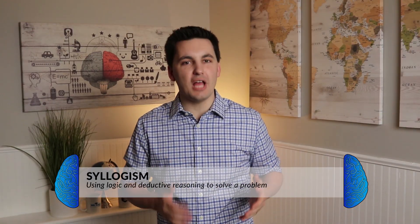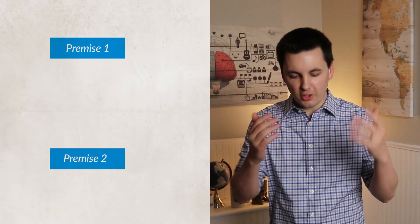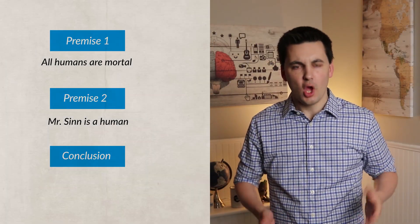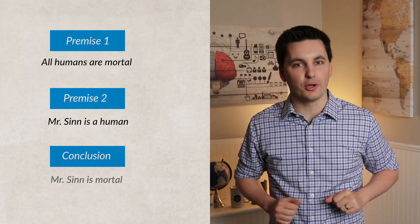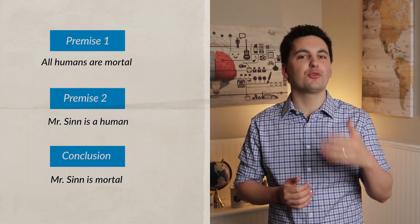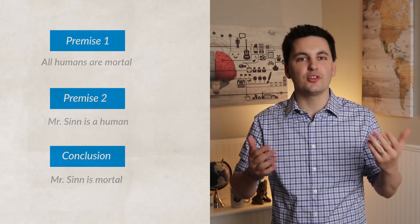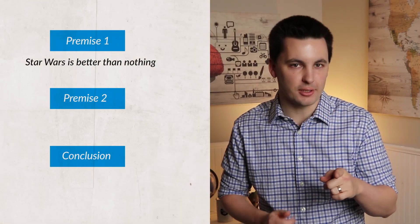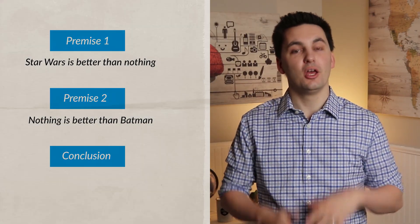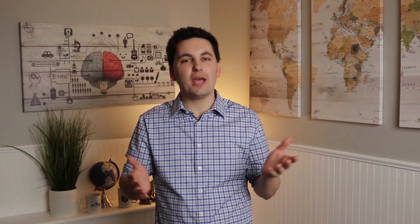We also use syllogism, which is when we use logic to try and solve a problem. For example, if all humans are mortal and Mr. Sinn is a human, we can conclude that Mr. Sinn is mortal. This skill can be difficult to master and we might fall for different logical fallacies, which are flaws in our thinking. For example, if I said Star Wars is better than nothing and nothing is better than Batman, therefore Star Wars is better than Batman. At first this might appear to be a logical statement, but did you notice the error? This statement is a logical fallacy known as equivocation. In this argument, the word nothing is referring to both not anything at all and all things. The context of the word changes and creates a vague and misleading argument with a double meaning.